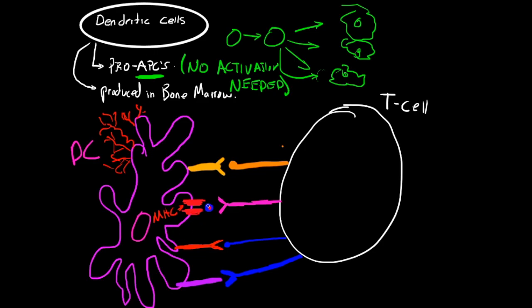One exception I want to mention before going into this communication between dendritic cells and T cells is that there are what are called follicular dendritic cells. They do not arise from the bone marrow, and they don't function as APCs.